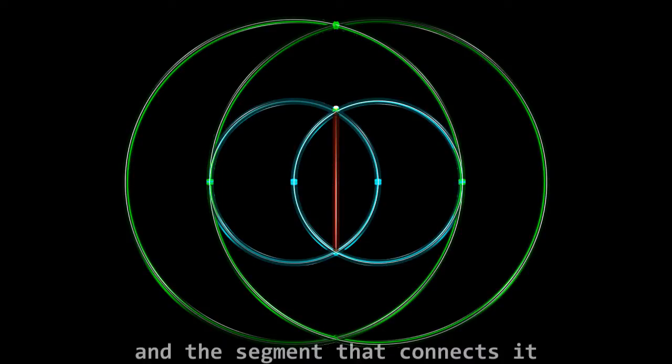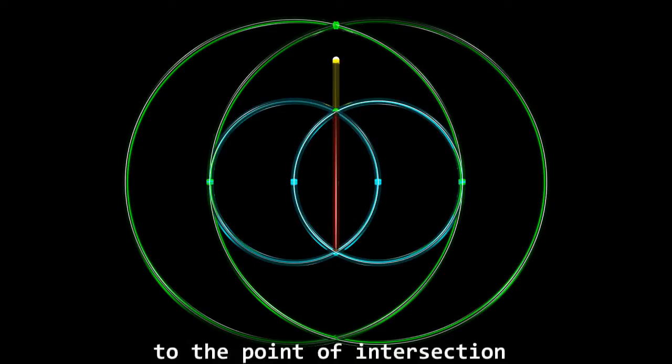The resulting segment and the segment that connects it to the point of intersection of the two major circumferences are in golden ratio.